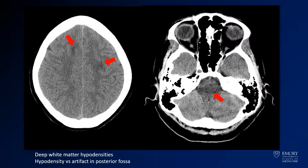Here you see the original CT. You have some hypodensities in the deep white matter, particularly up near the vertex. The abnormality on the right — this hypodensity in the brainstem — is very difficult to confirm as a real finding, given that this is an area prone to artifact from the adjacent bone.